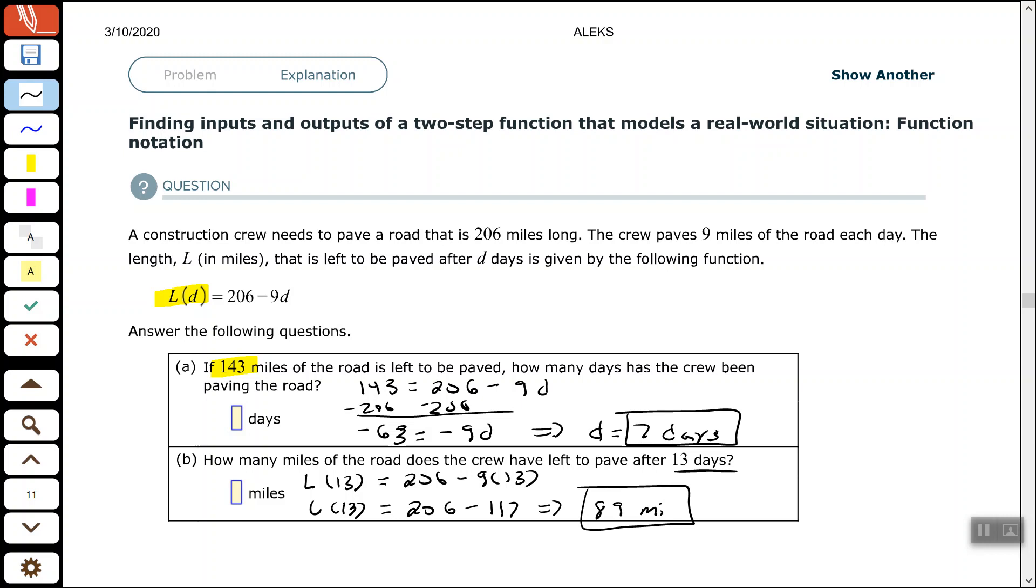Alright, good people. That's it for that problem. I hope you found it helpful. Make sure you pay attention to what is given. In Part A, we were given 143 miles, which told me to replace the L because it was in miles. In Part B, we were given 13 days, which told me to replace the D. So make sure you pay attention to that and work these problems out. I'll see you on the next one. Thank you.